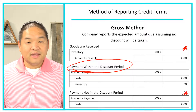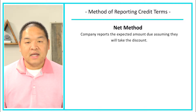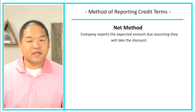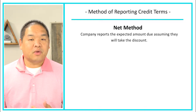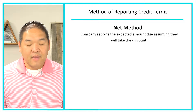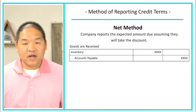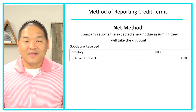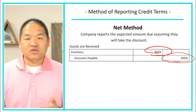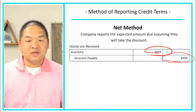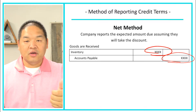The net method is where a company reports the expected amount due assuming they will take the discount. In this case, they assume they're going to take the discount, so they report inventory at its discounted amount and report how much is owed to the vendor at its discounted amount. When goods are received, they debit inventory and credit accounts payable — but the difference here is that number reflects the discount. In our example, $1,000 minus 2% gives us $980, so $980 is what we report.